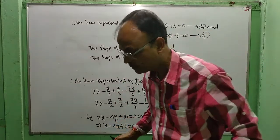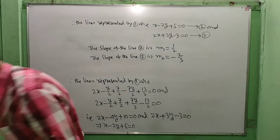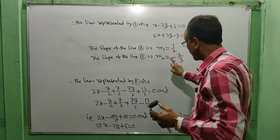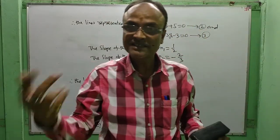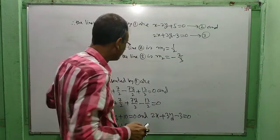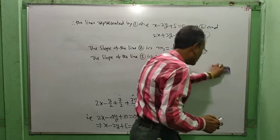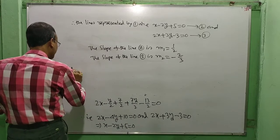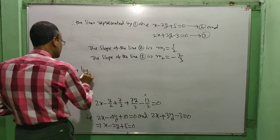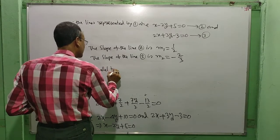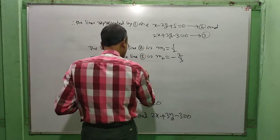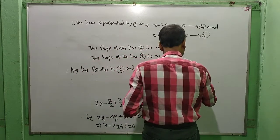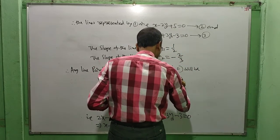Now we have to find two equations whose slopes are 1/2 and −2/3, also passing through the point (0, 0). Any line passing through (0, 0) will be of the form y = mx. Therefore, any line parallel to line 2 and passing through (0, 0) will be y − x/2 = 0.